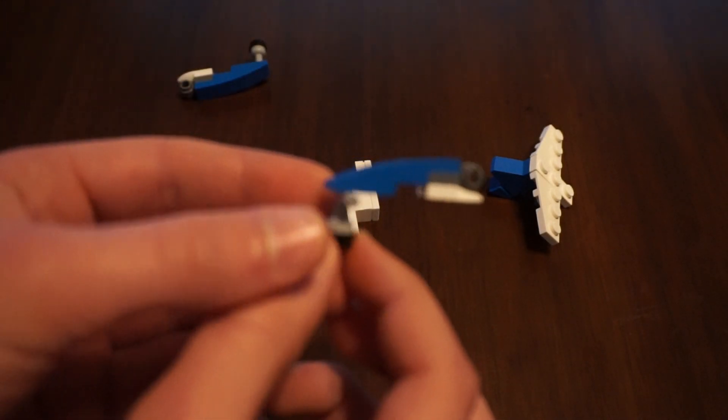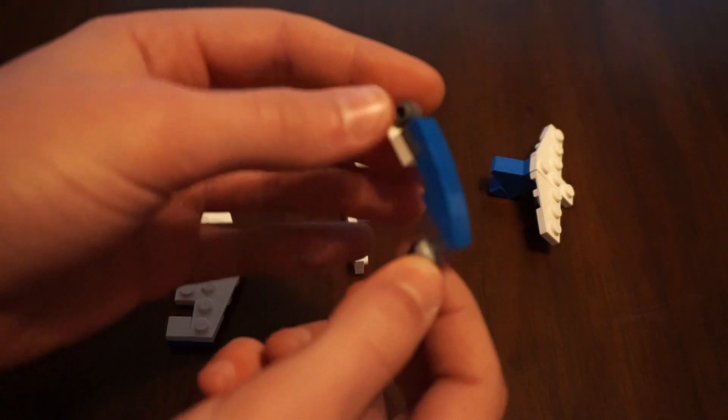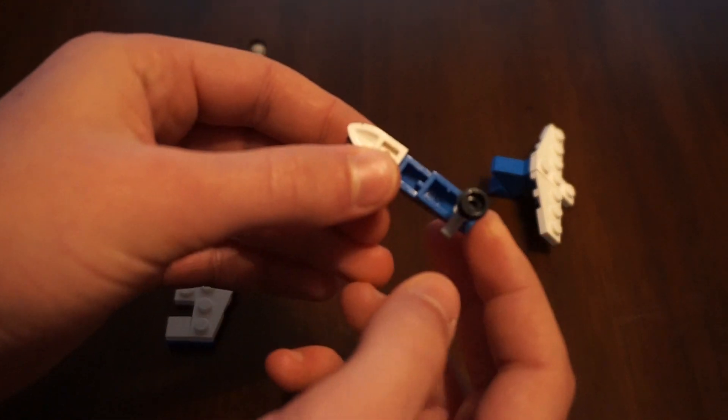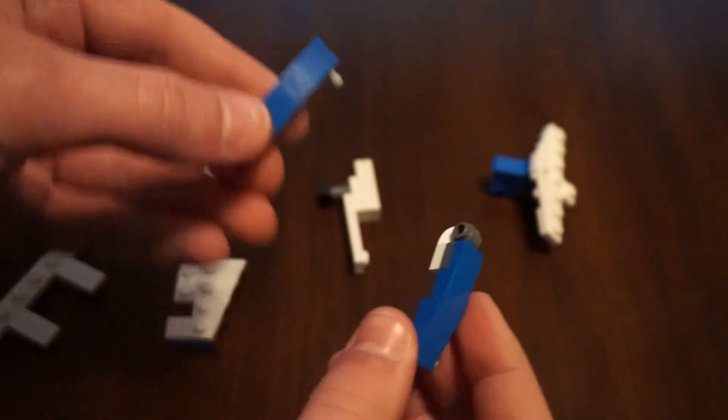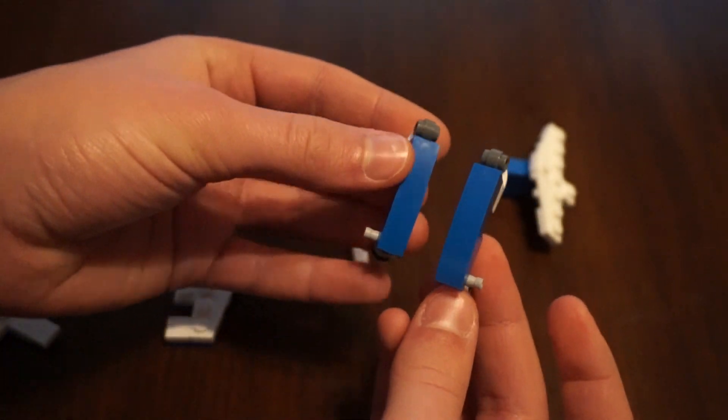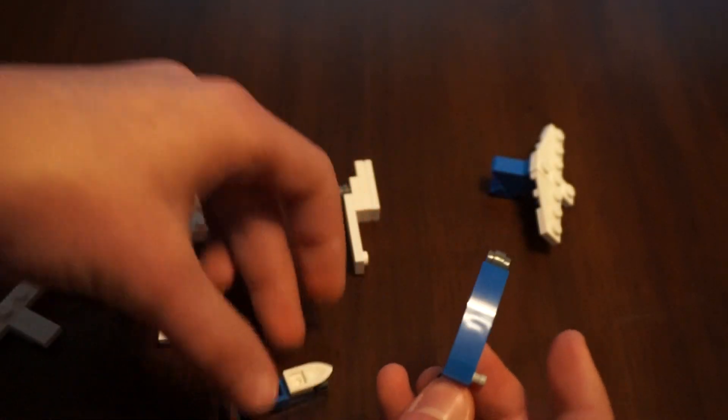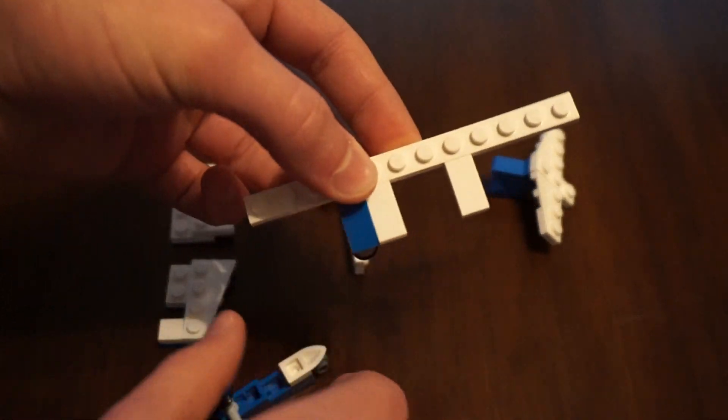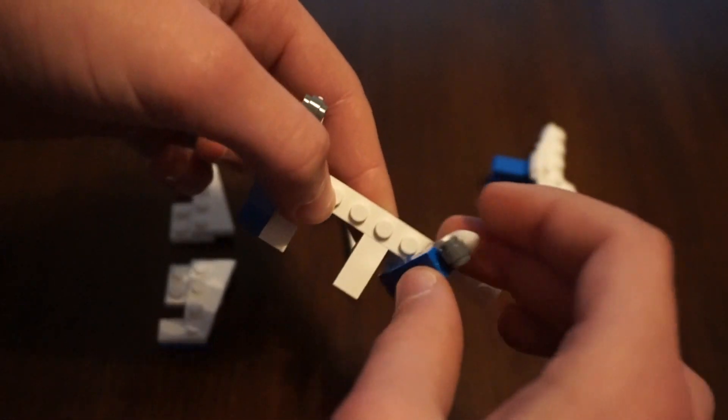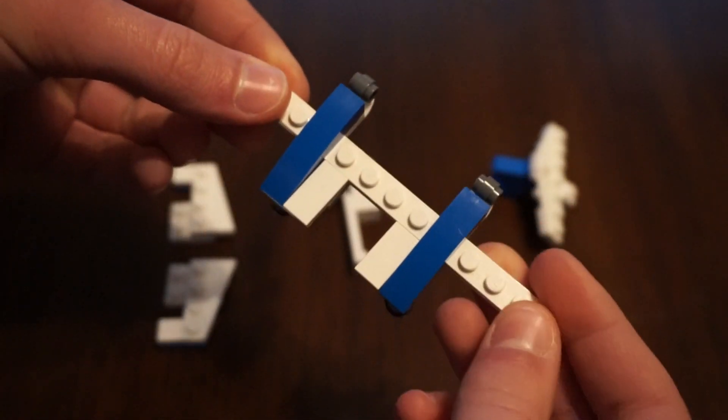We'll get two pieces like this, and that's the landing gear, and we'll do that twice, making them mirrored, and we will put them right next to the flat bricks, just like that.